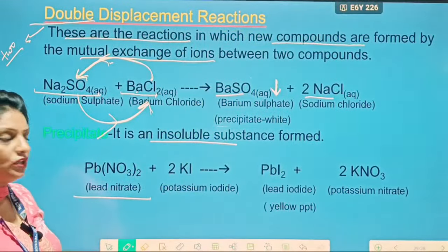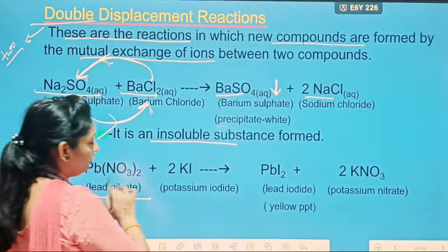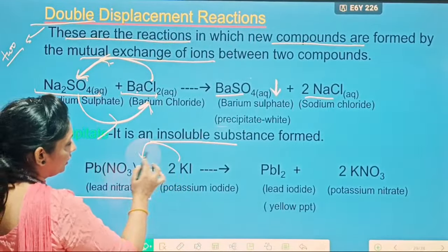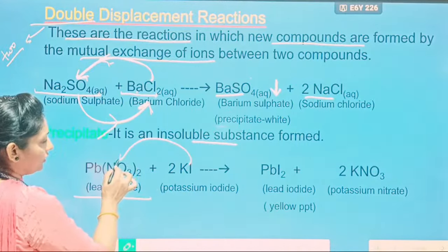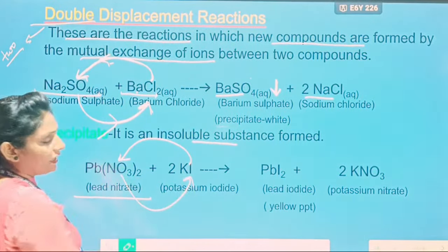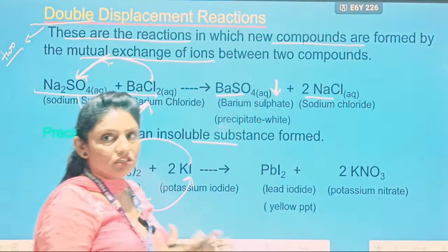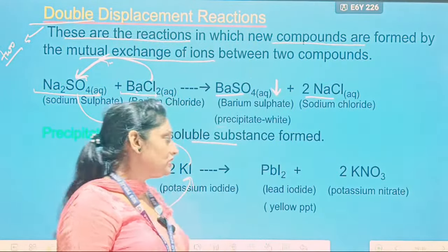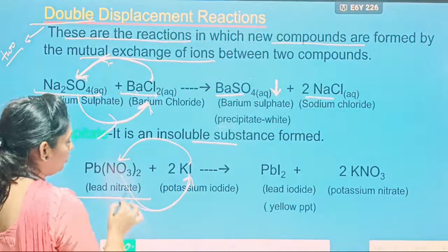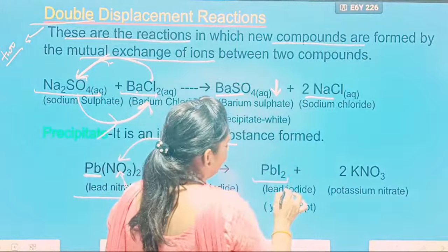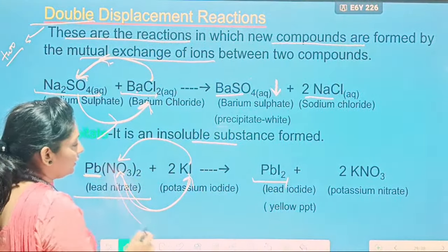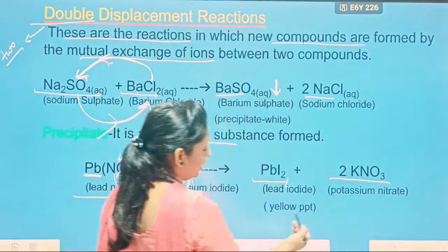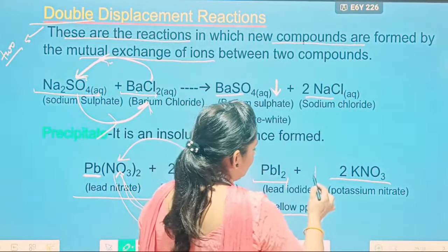For example, if you have Pb(NO₃)₂ — this is lead nitrate — and we react this with KI, which is potassium iodide, a double displacement reaction takes place. This iodine and nitrate both will exchange each other — two ions exchanging — so it is a double displacement reaction. This iodine will go with lead, and you get lead iodide. The nitrate ion will go with potassium, and you get potassium nitrate. Here you are getting a yellow precipitate of lead iodide.